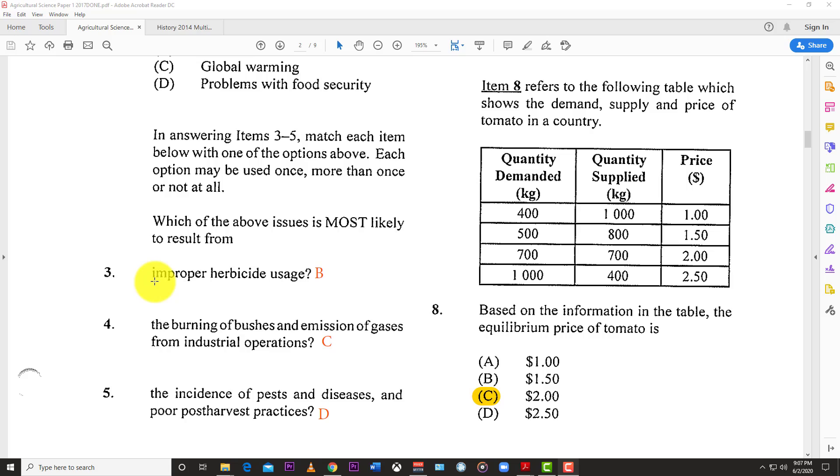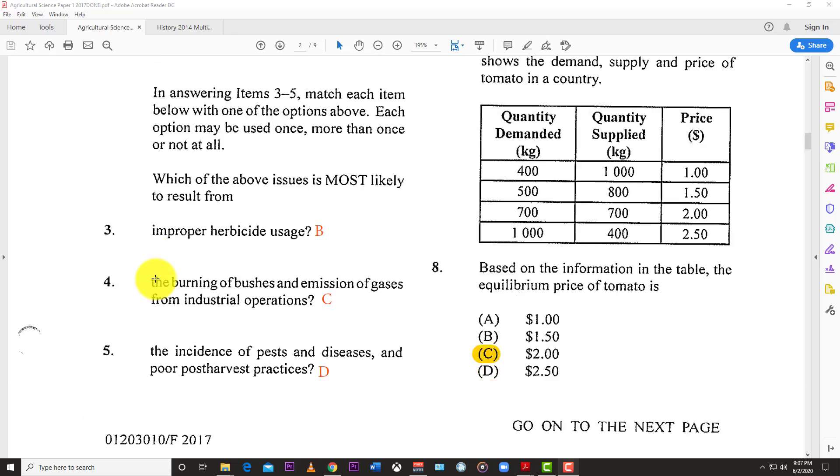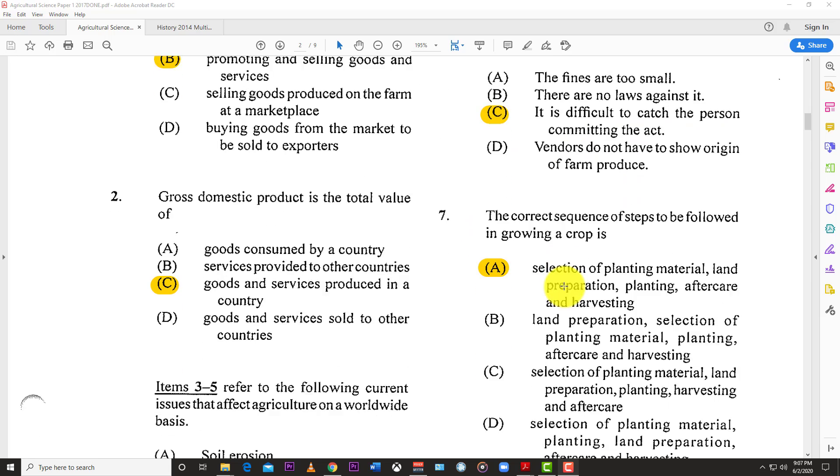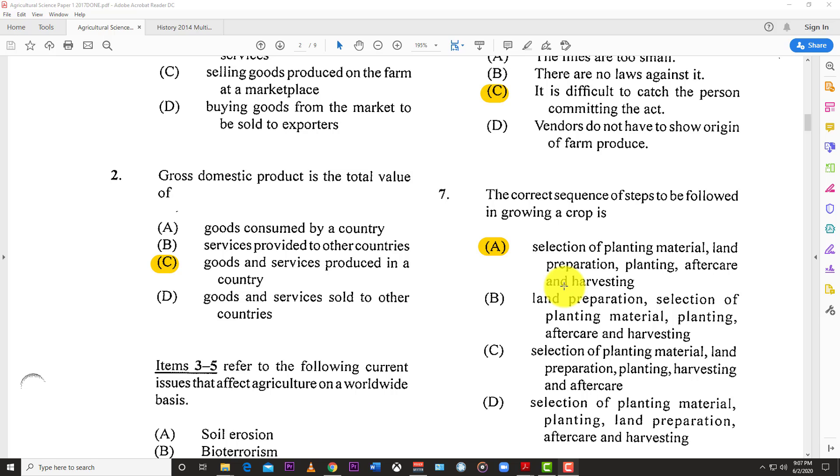Number six: Which of the following is the most likely reason for the proliferation of perennial larceny in the Caribbean? Most of them are correct, but the best answer is C. It is difficult to catch the person committing the act.